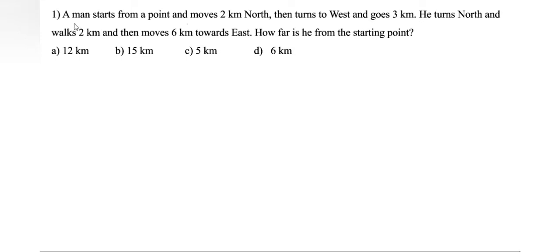Today we are going to learn distance reasoning problems. A man starts from a point and moves two kilometers north, then turns to west and goes three kilometers. He turns north and walks two kilometers and then moves six kilometers towards east. How far is he from the starting point?